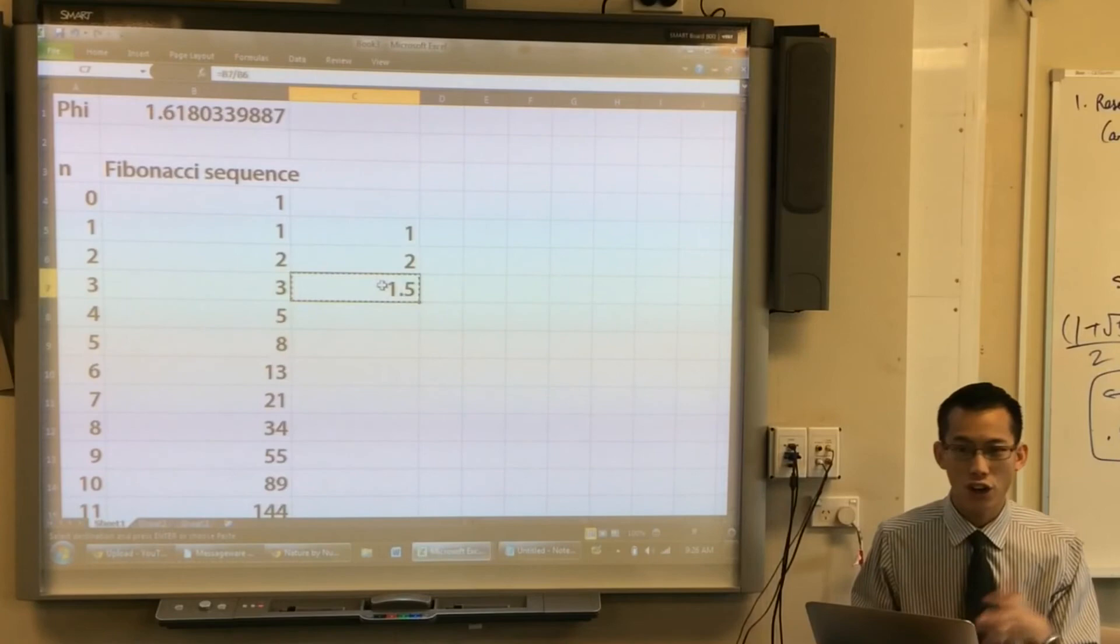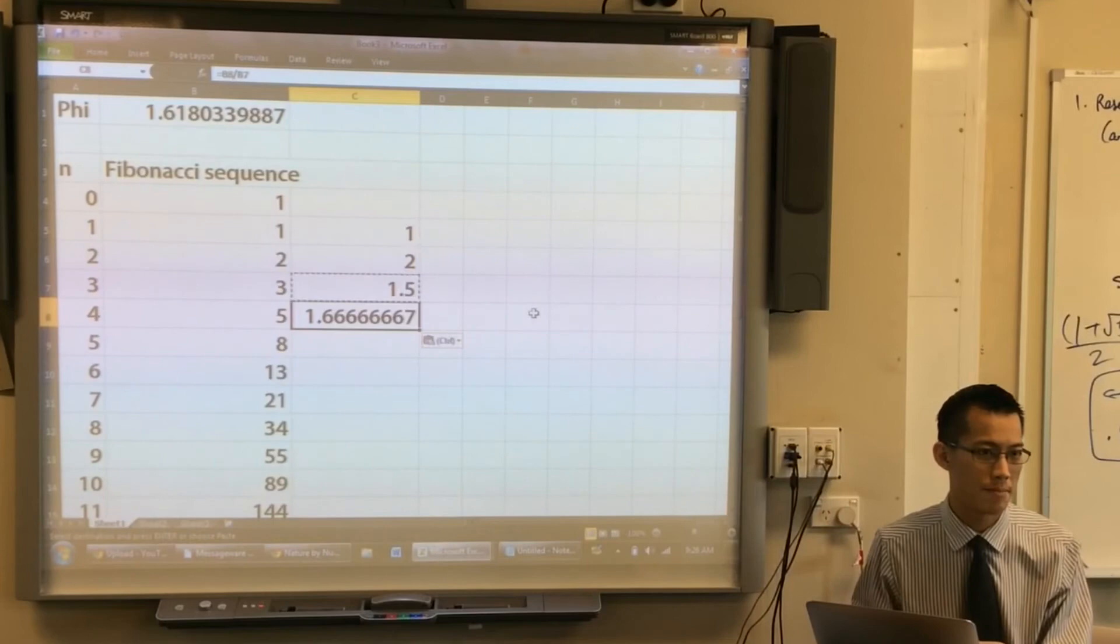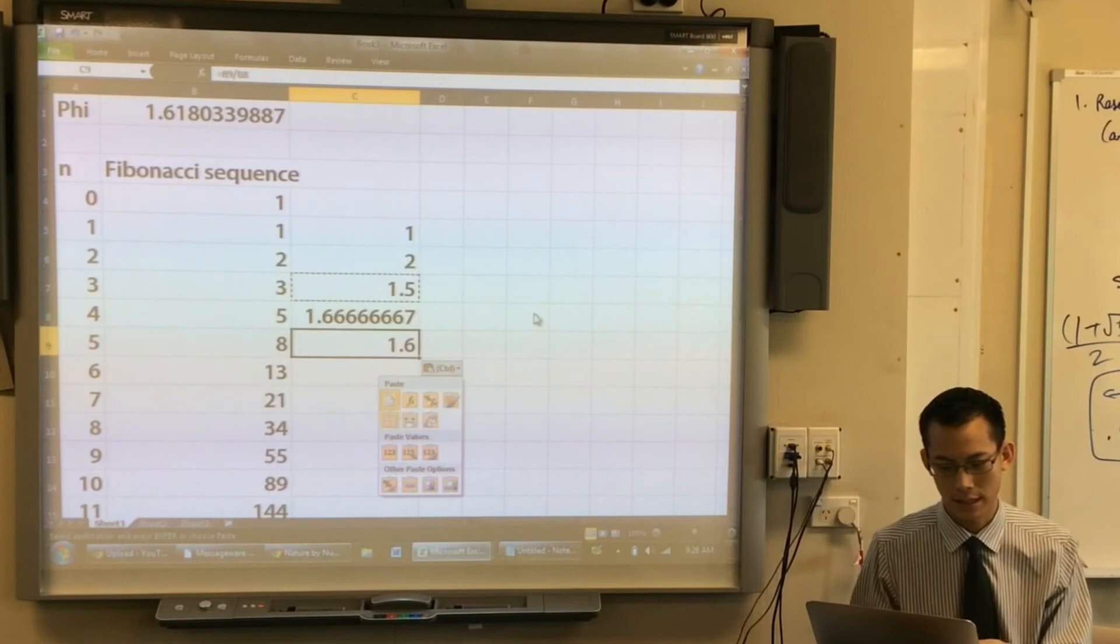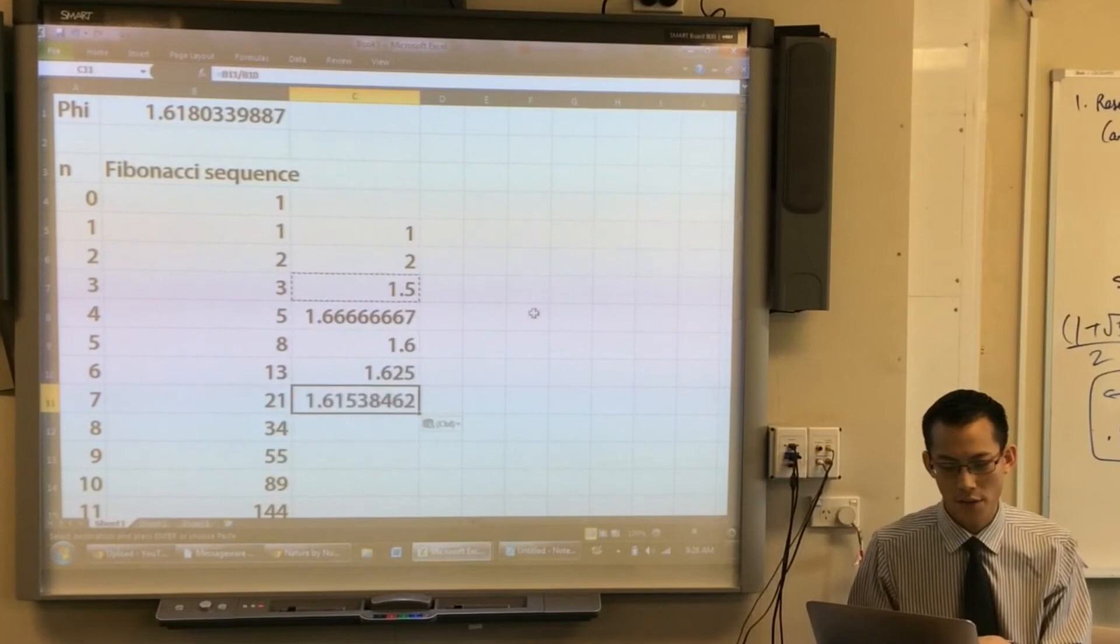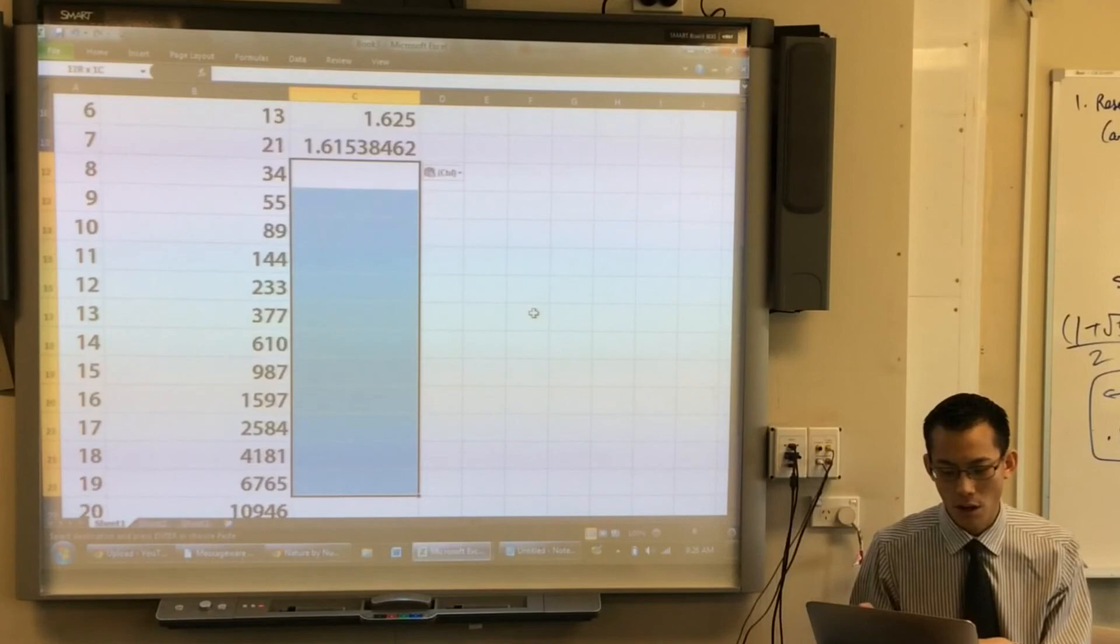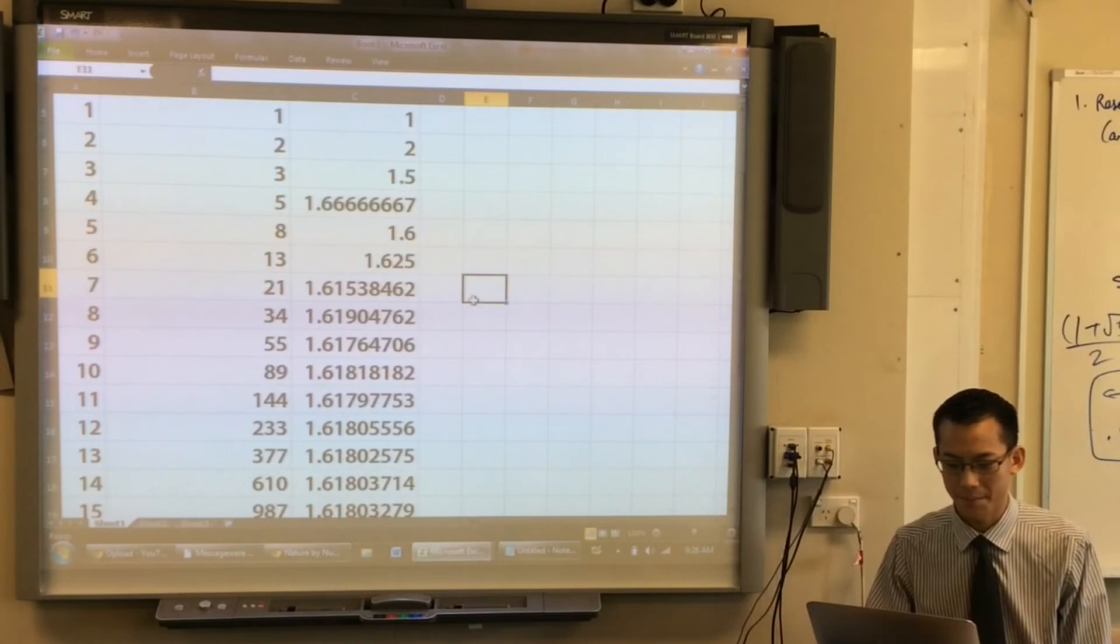I'm going to now copy this formula further down. I've got five over three. That's one and two thirds. Now I'm going to have eight over five, which is 1.6 exactly. Then I'm going to have 13 over eight. 21 over 13 is starting to get messy, because the denominators are starting to get messy. And I'm just going to go all the way here. All right. Now, what's going on? What's happening? I'm going to do a bit of a trick here, and I'm just going to freeze my top row. You don't need to do this.